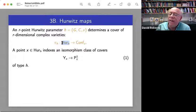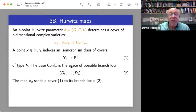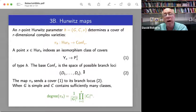So that's what this Hurwitz space is. And the base space, configuration space, is the space of possible branch loci. So if you have a map, you can just look at its set of critical values. And the map from Hurwitz space to configuration space sends a cover to its branch locus.